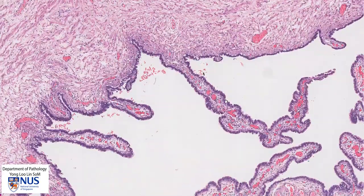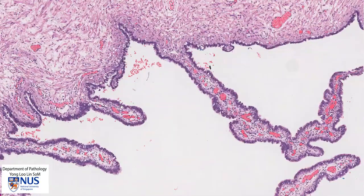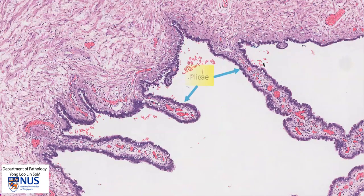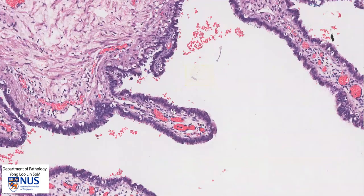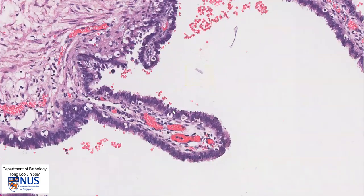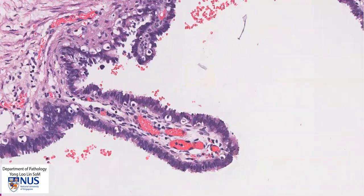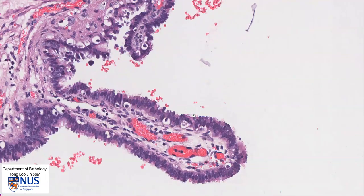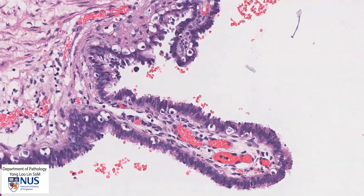Here is the more normal appearing fallopian tube mucosa with these mucosal folds called plicae. The plicae are lined by tall columnar cells, many of which exhibit cilia on the surface, and we can see those cilia here.